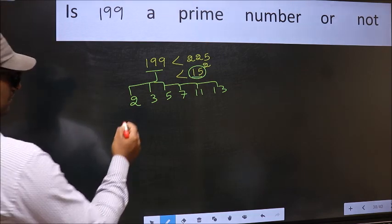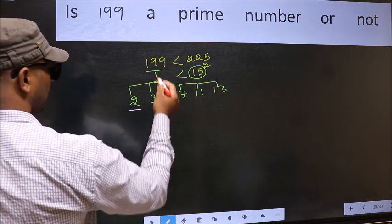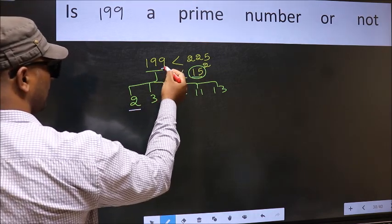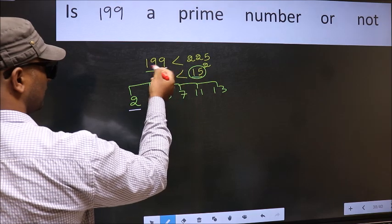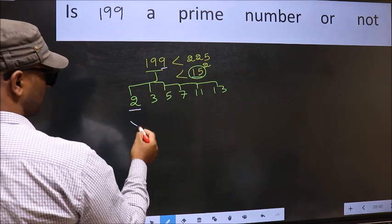Starting with the number 2: the last digit is 9, which is not even, so 199 is not divisible by 2.